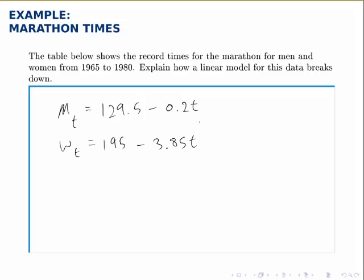Notice the women's growth rate or decay rate is much more extreme than the men's, and we notice that on the graph as well. The line that predicts the women's marathon times is much steeper than the one for the men.